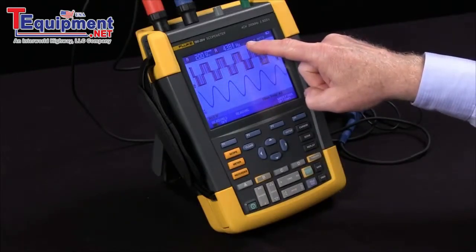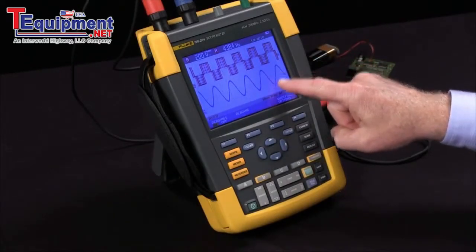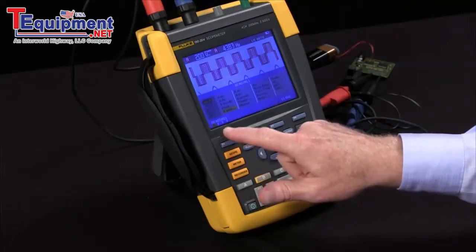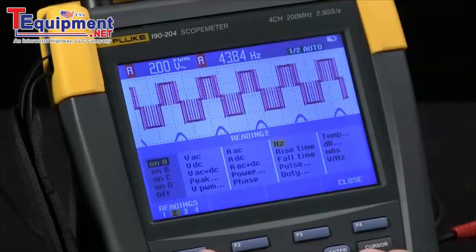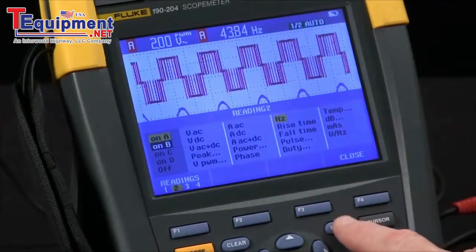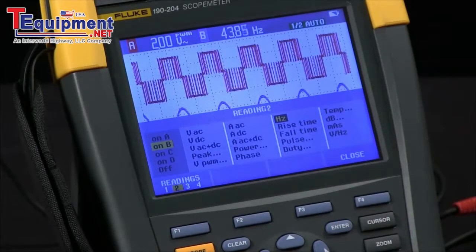I want to make the second reading for channel B. Go to readings again, press F1 to change to reading 2, bring channel A down to channel B, enter, and we'll leave it at frequency.